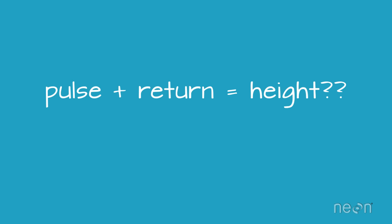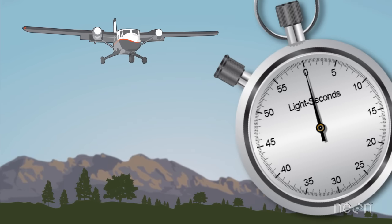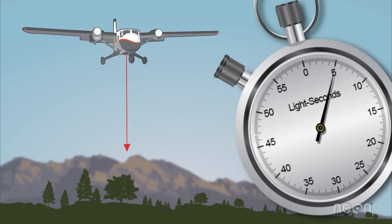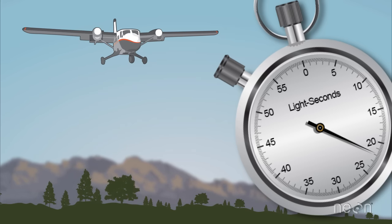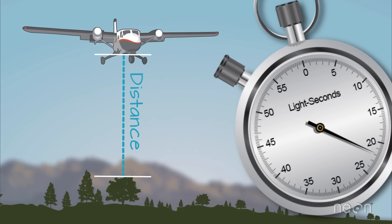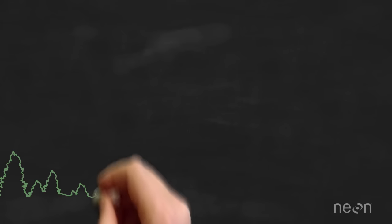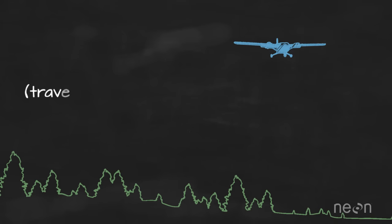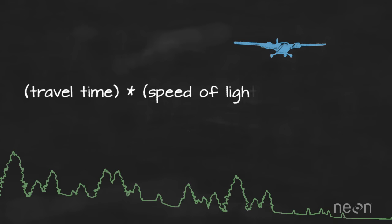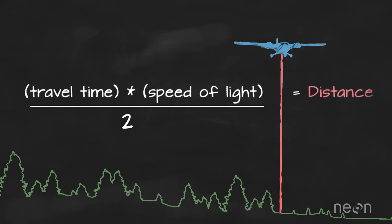All of this pulse and return business is great, but speaking the language doesn't give us height. To get height, the LIDAR system records the time it takes for the light energy to travel to the ground and back. The system then uses the speed of light to calculate the distance between the top of that object and the plane. The distance calculation is: travel time multiplied by the speed of light, divided by two — since the light traveled to the ground and back. This gives us how far the light traveled, and therefore the distance between the plane and the ground.